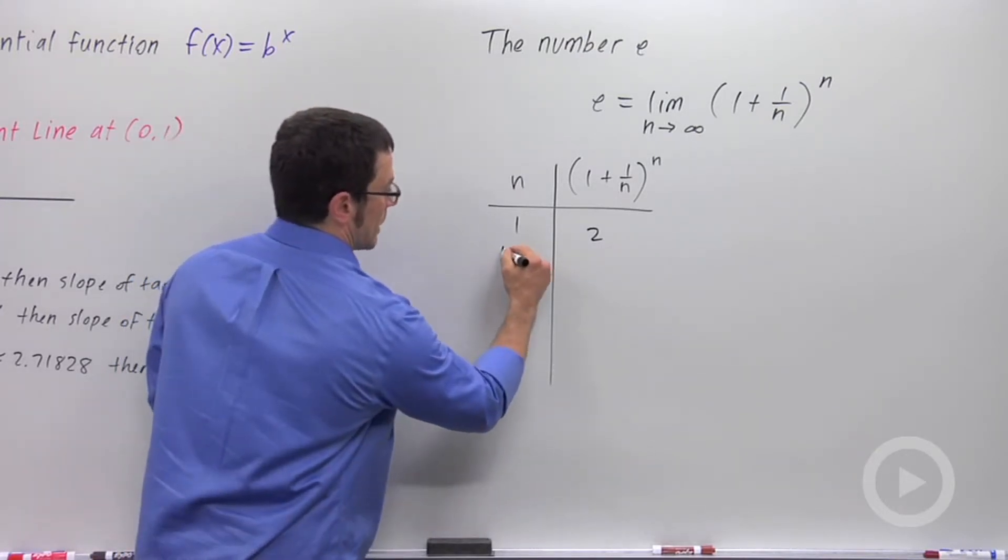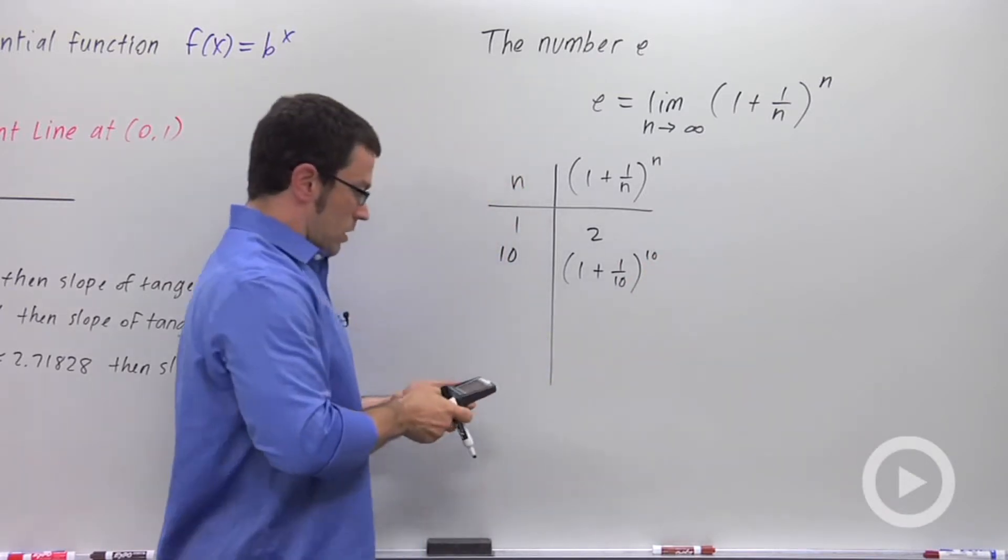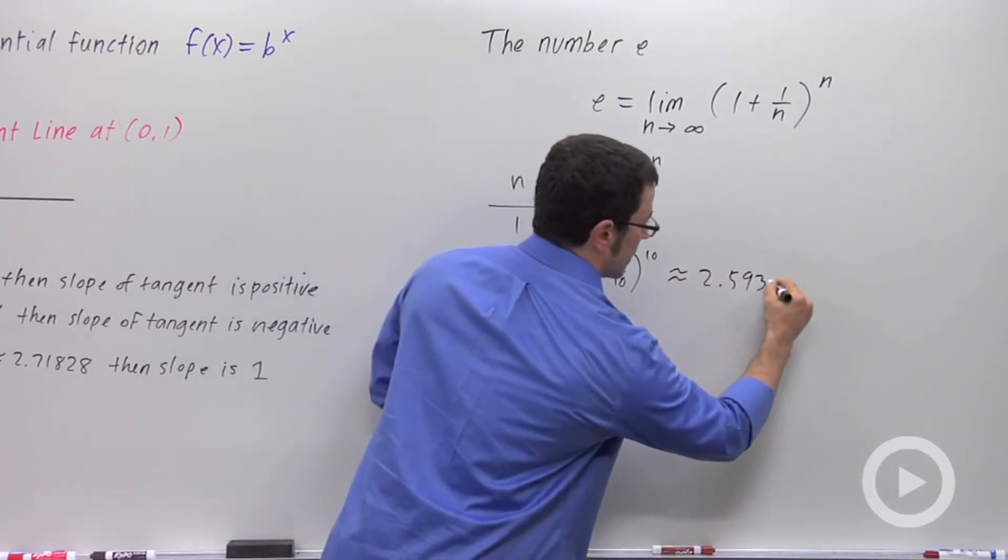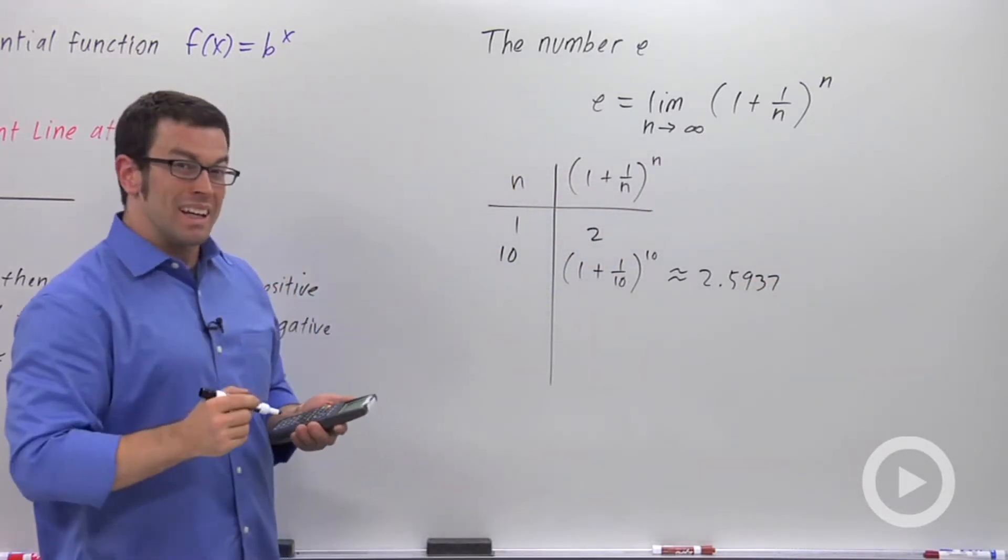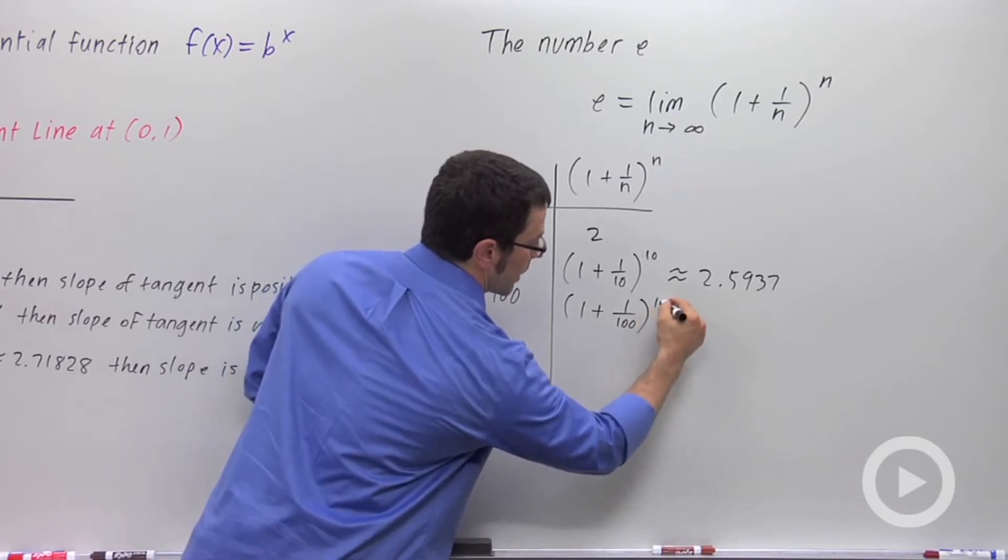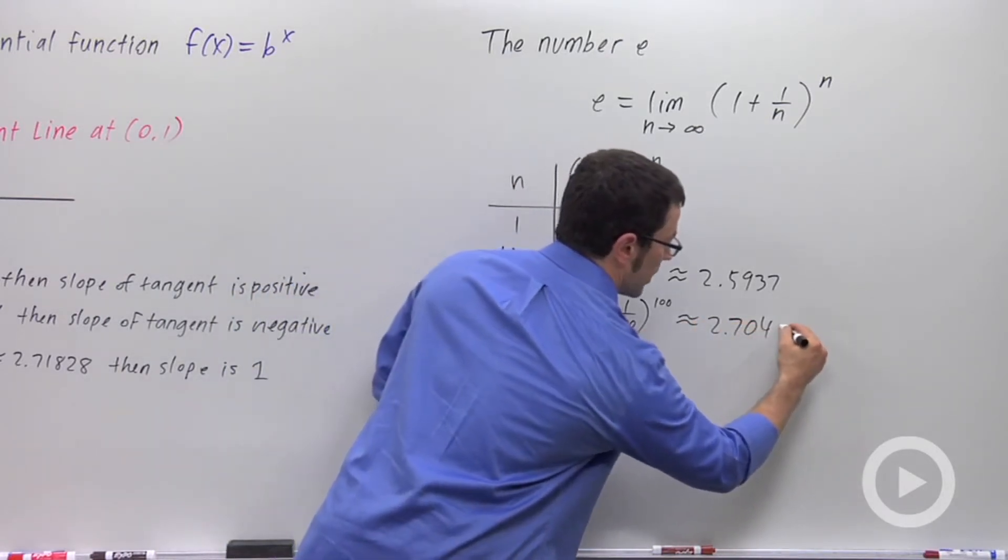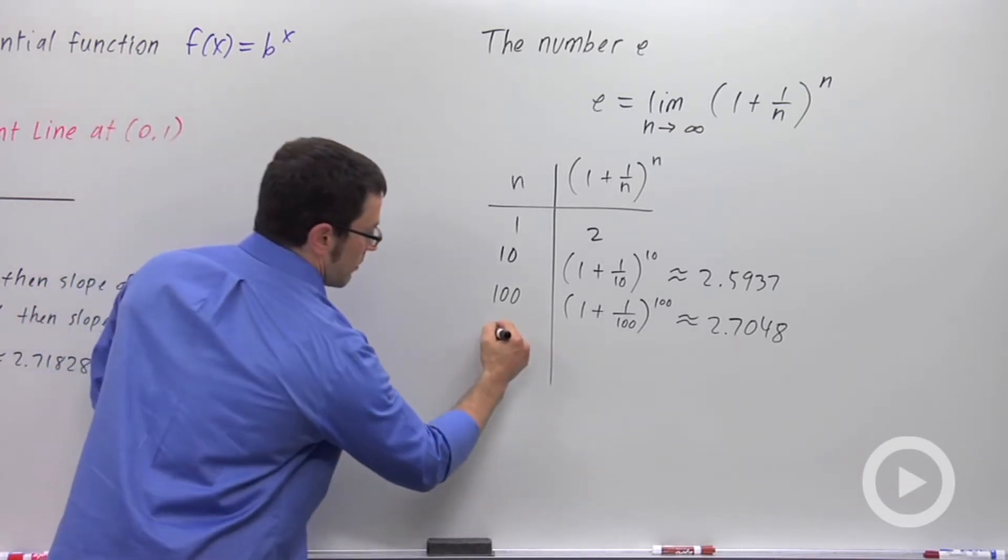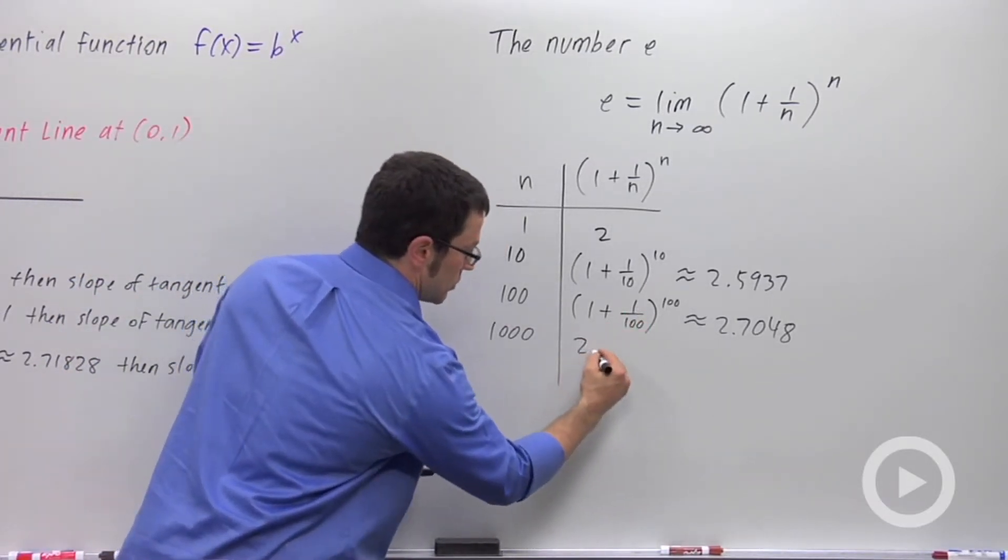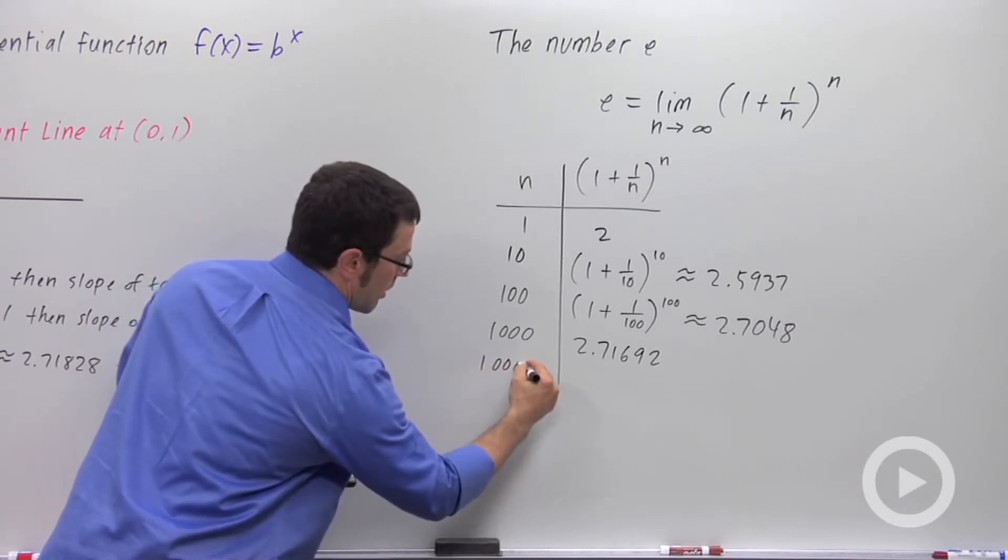Alright. So when I plug in 10, I'm getting (1 plus 1 over 10) to the 10th power. According to my calculator, it's approximately 2.5937. If I plug in 100, I get (1 plus 1 over 100) to the 100th power. It's approximately 2.7048. I'm going to keep going up by powers of 10. So 1,000, I get 2.71692. How about a million?